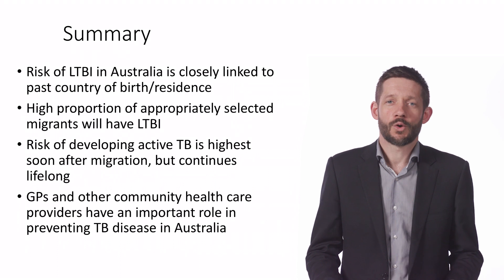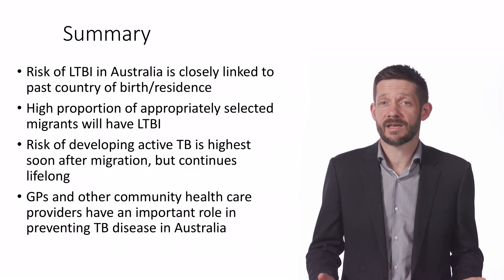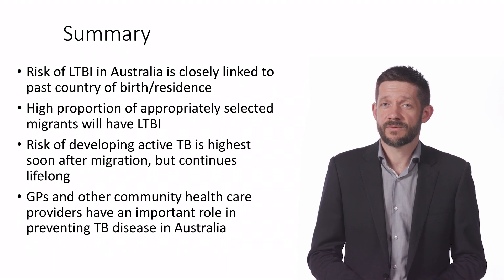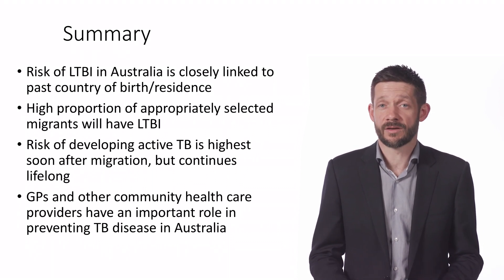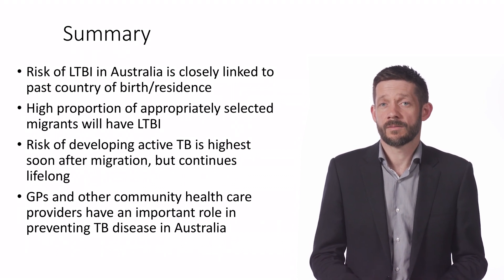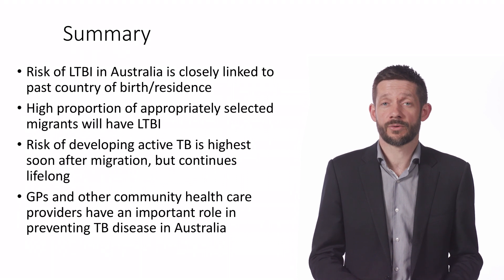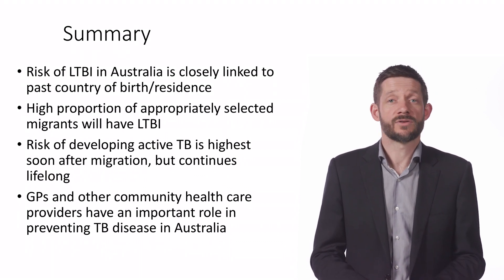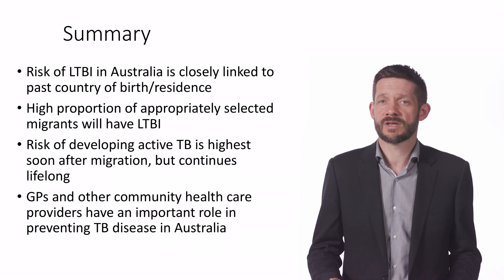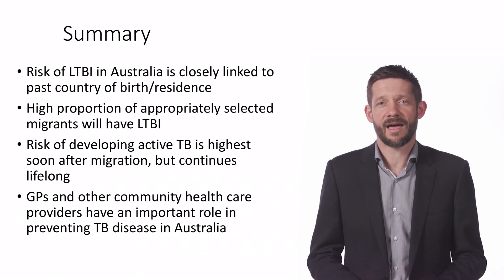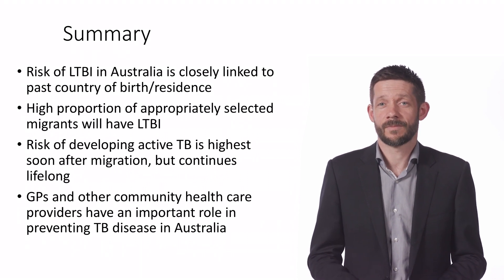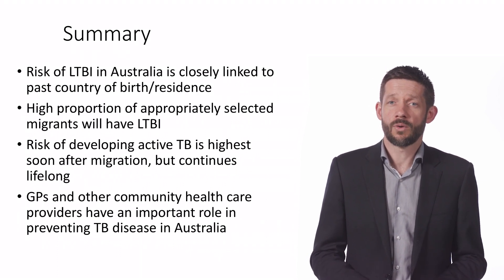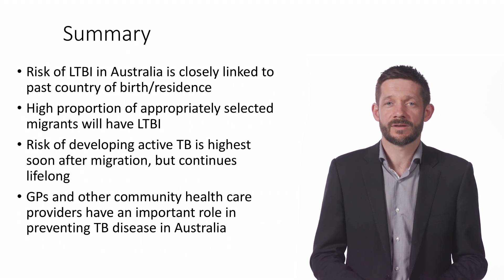Wrapping up this first talk, we've seen that the risk of having latent TB in Australia is very closely connected to the country in which people were born, particularly for countries with high rates of TB disease. Testing for latent TB in migrants to Australia is high yield, with over 17% likely to have infection. People with latent TB are at long-term risk of progressing to become sick, with the highest risk in the first few years after arrival. While they have latent TB, they have no symptoms or signs of infection, and general practitioners thinking to do a test for latent TB may be the only opportunity they have for getting an early chance to prevent illness. This is about preserving and promoting the long-term health of Australians born overseas, and community healthcare workers of all disciplines have a critical role in encouraging awareness and testing for latent TB.